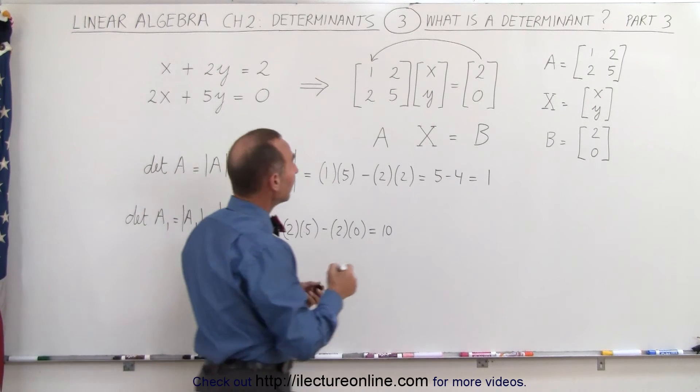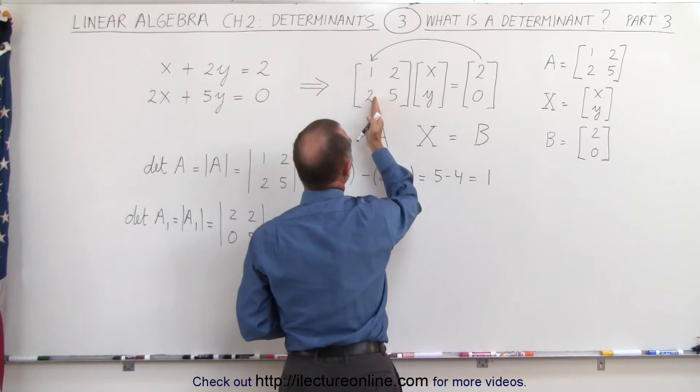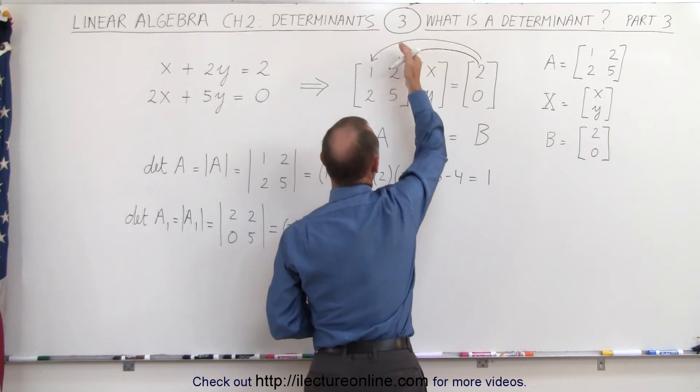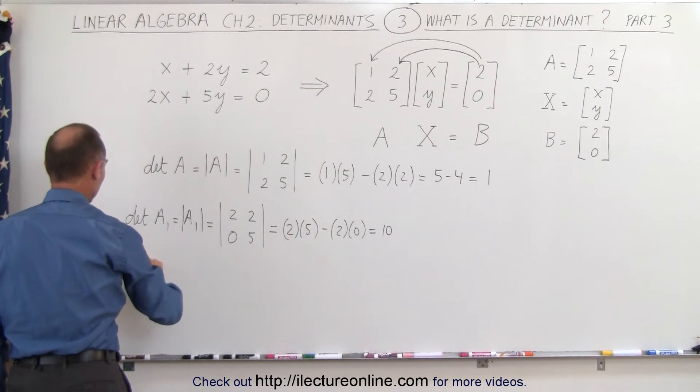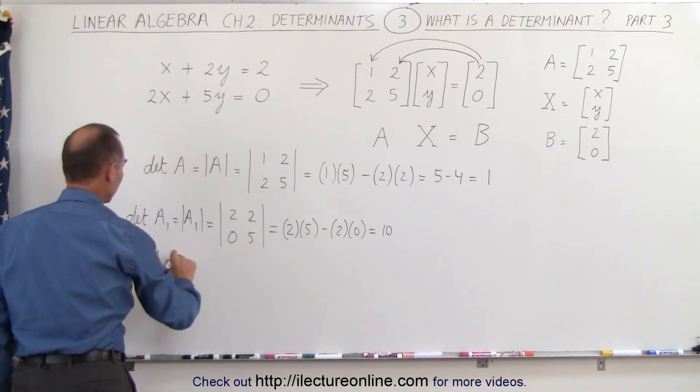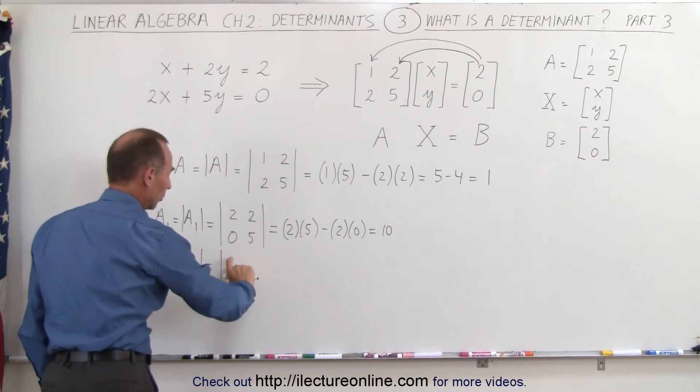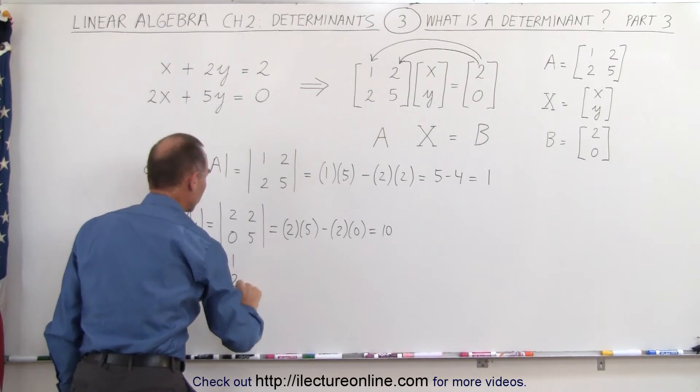We do it again: restore the elements of matrix A in the first column, but now take these elements and replace the second column with them. We now get a second determinant, A2, which we can write like this. The first column goes back to the original, 1 and 2, but the second column